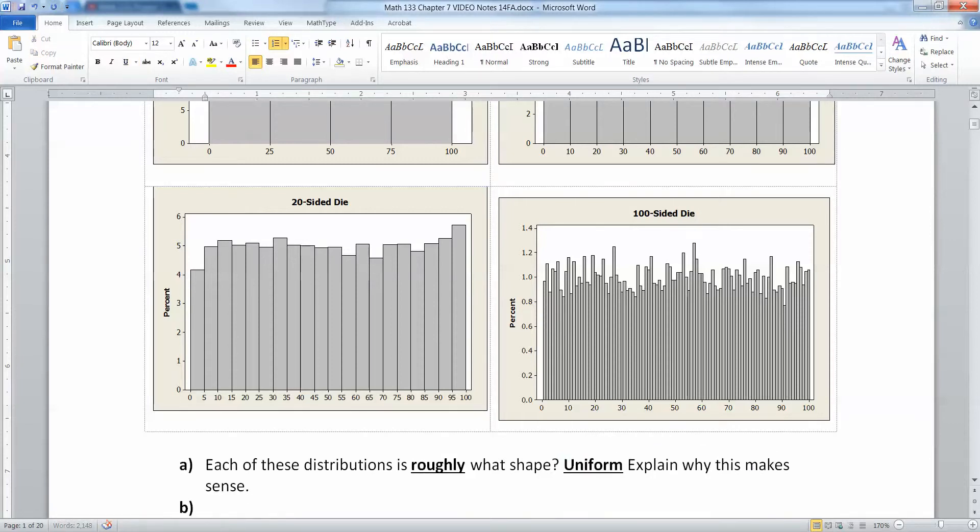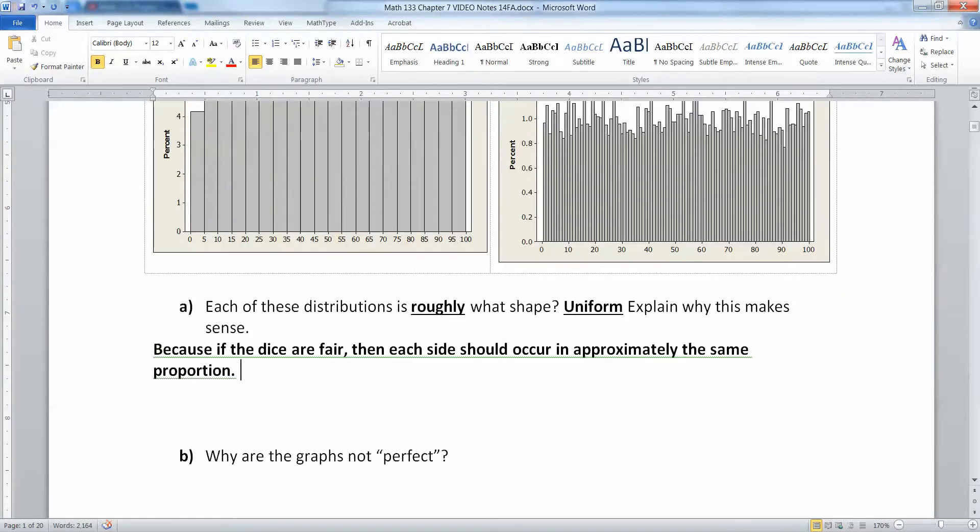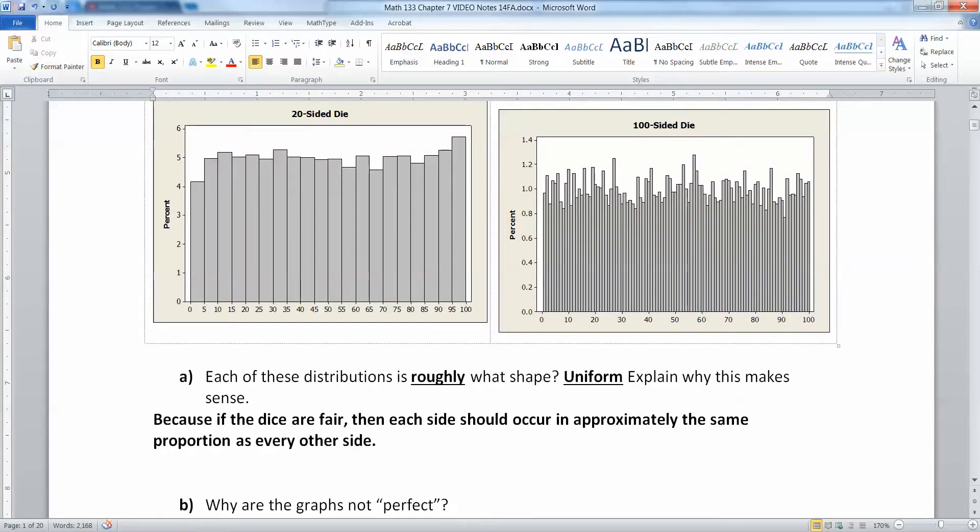That would make sense because if the dice are fair, then each side should occur in approximately the same proportion as every other side. That's what a uniform distribution is - when all of the bars are roughly the same.